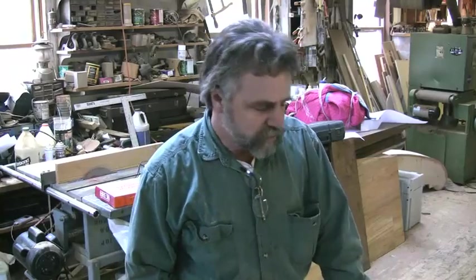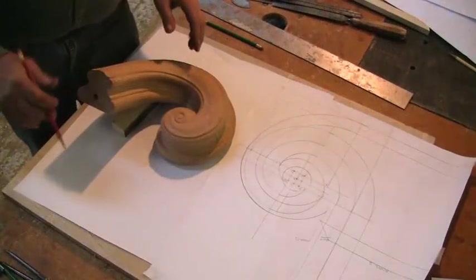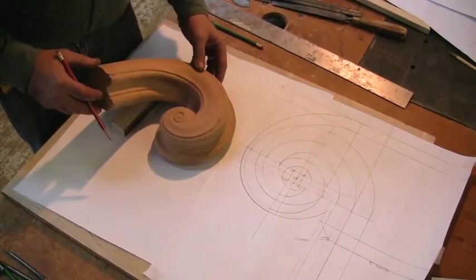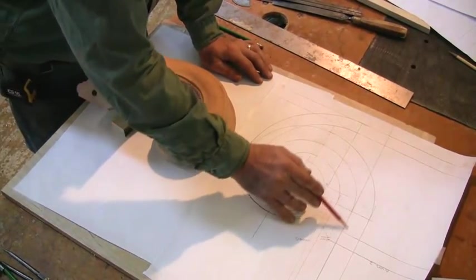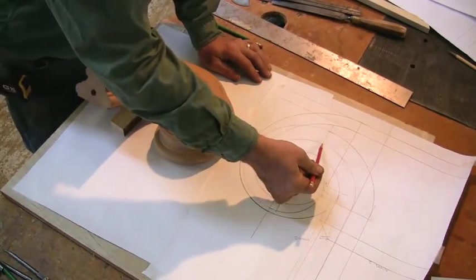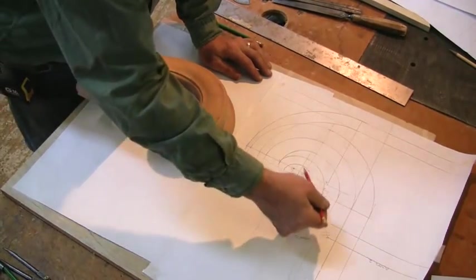So we're going to start with the most important part of the handrail, the volute. This volute is going to be made in two pieces, and you can see one of them will come down from the straight rail and go to here, and the other piece will start here and go around here.